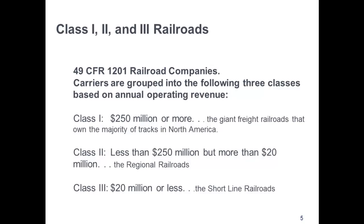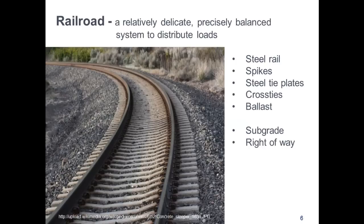Class 1 is $250 million or more — these are the giant freight railroads that own the majority of tracks in North America. Class 2 are those that are less than $250 million but more than $20 million — the regional railroads. And Class 3 is $20 million or less — those are the short-line railroads. Let's talk about the railroad infrastructure itself.